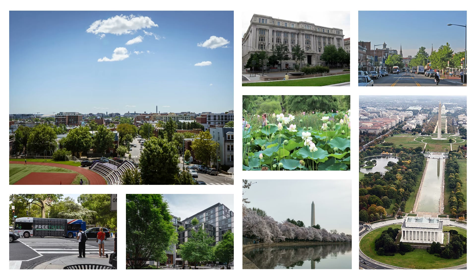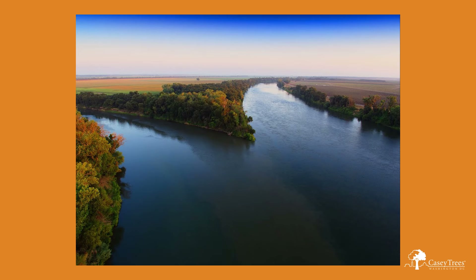Before DC looked like this, it looked like this. While it wasn't actually ever a swamp, Washington DC was built at the confluence of two rivers, which is what gives us the swampy summers DC is famous for. At the time, the area was home to seven indigenous tribes, two of which DC's rivers are named after — the Anacostia River after the Anacostan tribe, and the Potomac River after Patawamak, a Native American village on the river's southern bank. The area was covered in 2,000 acres of wetland surrounded by old growth forest and was rich in natural resources.